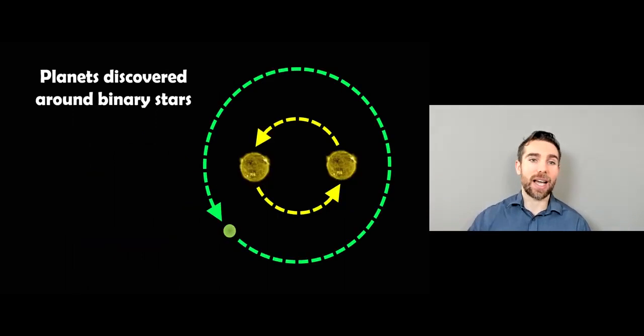Now, we have detected numerous planets around binary stars. We've actually discovered planets around more than two stars. But for this video, we're just concerned with binary stars. And we want to have a look at the sort of orbit that that planet can have in those systems.